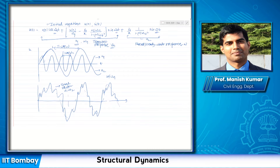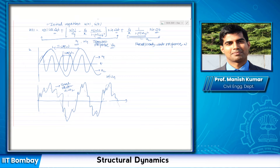For the steady state response, the amplitude is constant and does not depend on any initial condition. As long as there is a forcing function sine omega t, the steady state response exists whether or not there is damping. The transient response depends on initial conditions u-dot-zero and u-zero, whereas the steady state response does not depend on the initial condition.